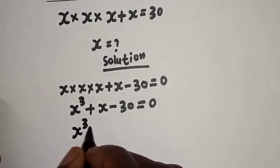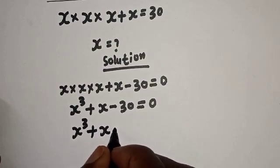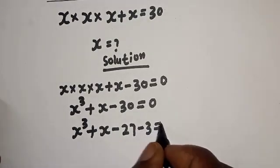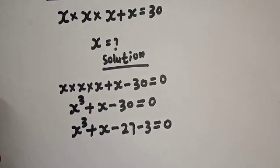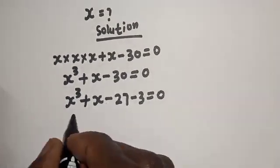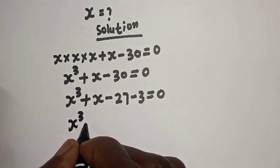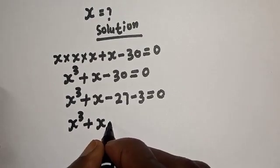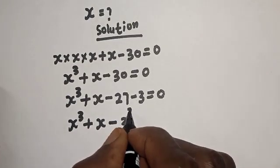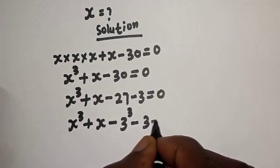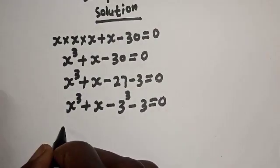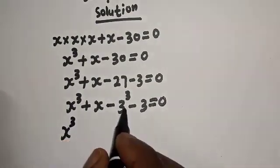Then s³ plus s minus 30 can be rewritten. We note that 30 = 27 + 3, so this becomes s³ minus 27 plus s minus 3 equals zero, which is s³ minus 3³ plus s minus 3 equals zero.